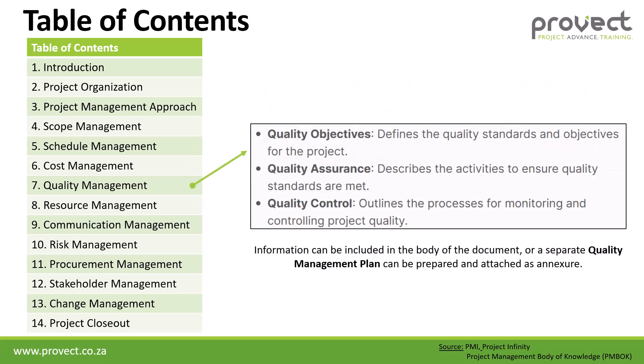The quality management plan covers quality objectives — defining your quality standards and objectives — quality assurance describing activities to ensure quality standards are met, and quality control outlining the processes for monitoring and controlling project quality. The information can be included in the body of the document or a separate quality management plan can be prepared and attached as an annexure.